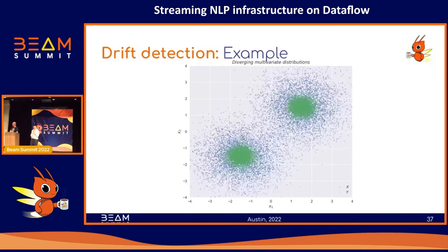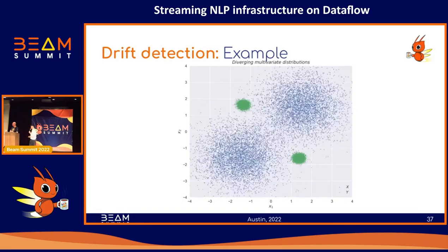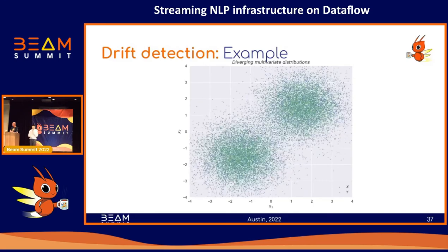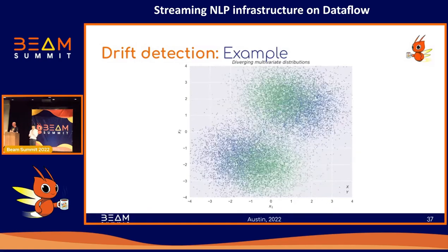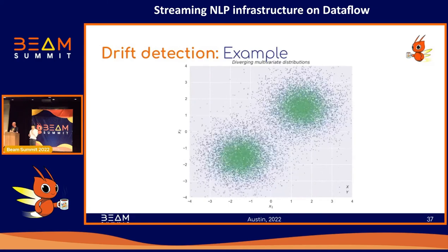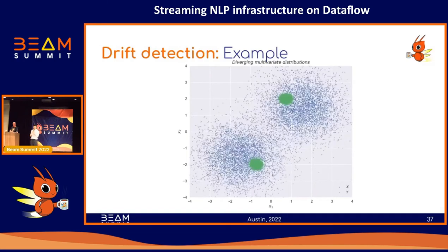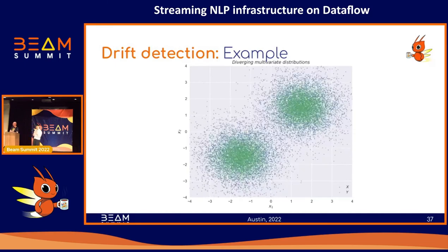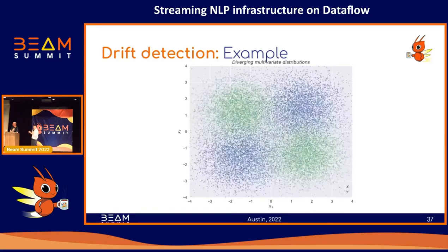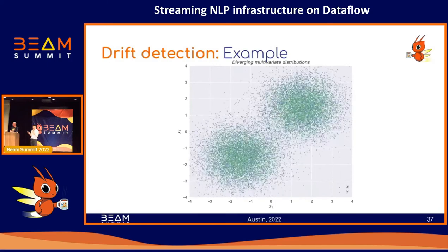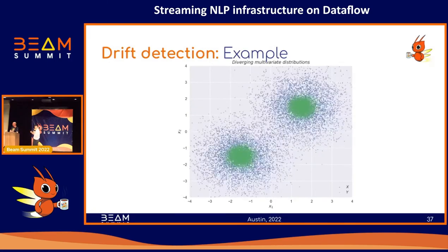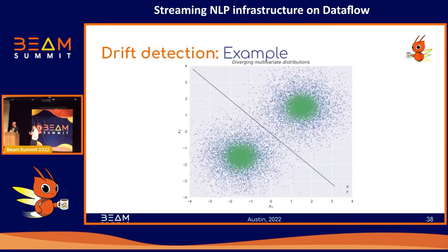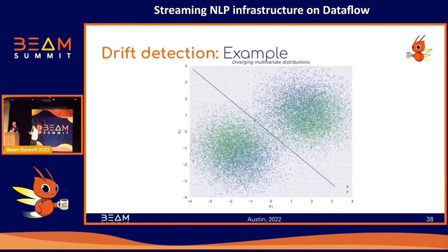Signals on whether model input data and output predictions are drifting can help us infer whether models need to be retrained by data scientists or by an automatic process. I'll focus on the problem of model input data drift and how we use Beam to calculate these metrics. We have an example of data points drawn from two different processes: the blue represents a process with a stationary distribution, and the green represents a process whose distribution varies at every step. The problem of drift detection is the task of calculating a metric that summarizes the magnitude to which the green dataset differs from the blue.